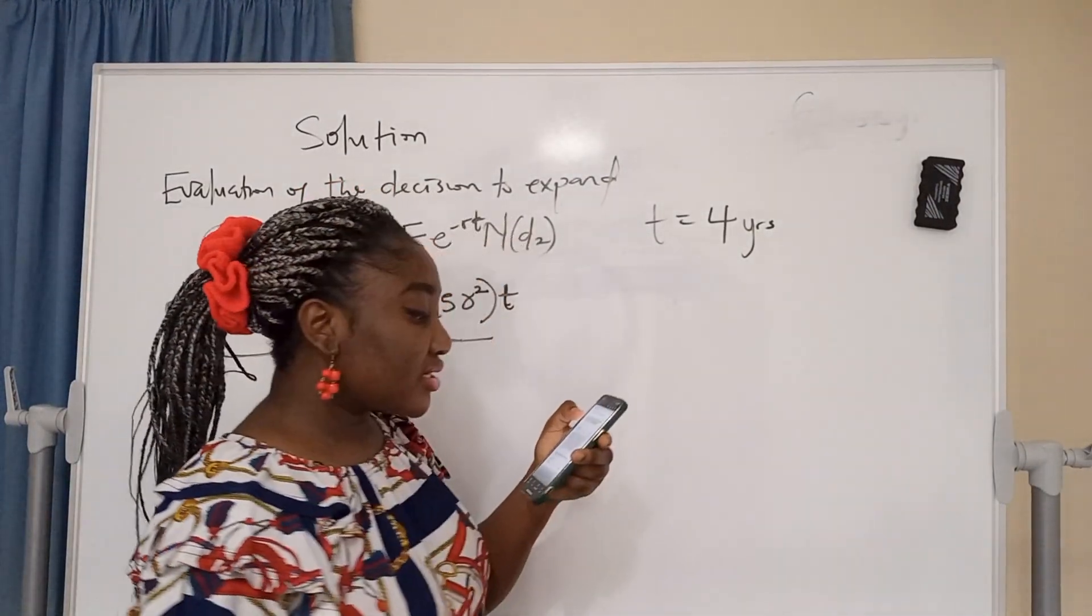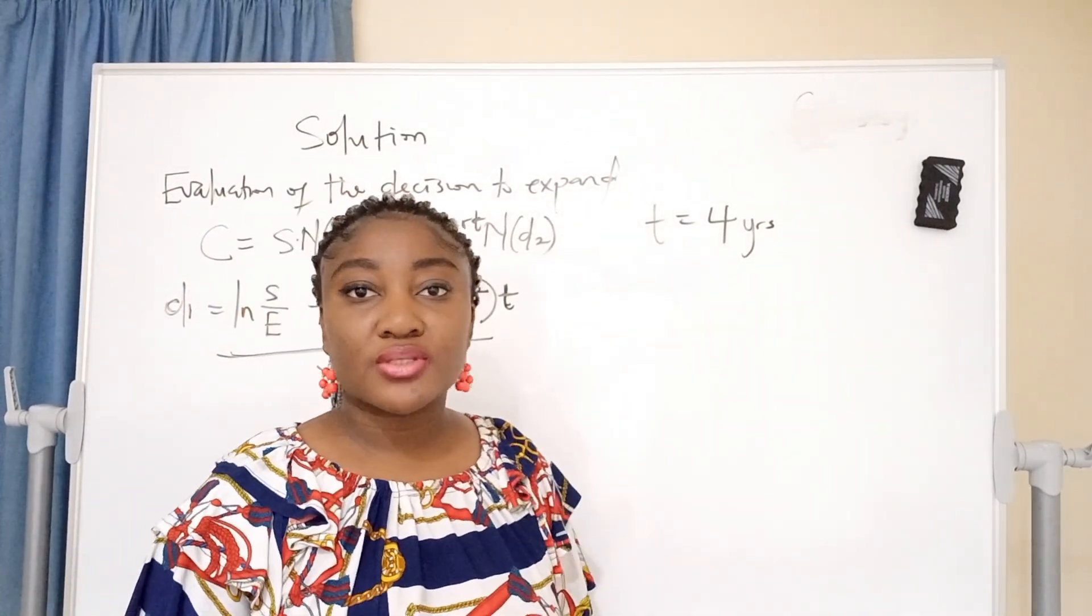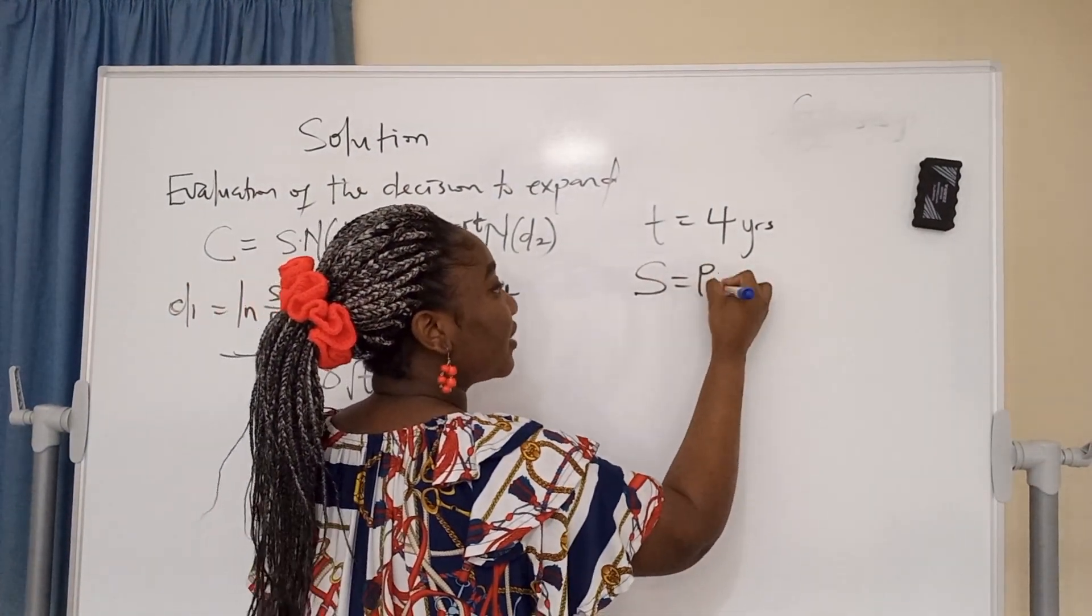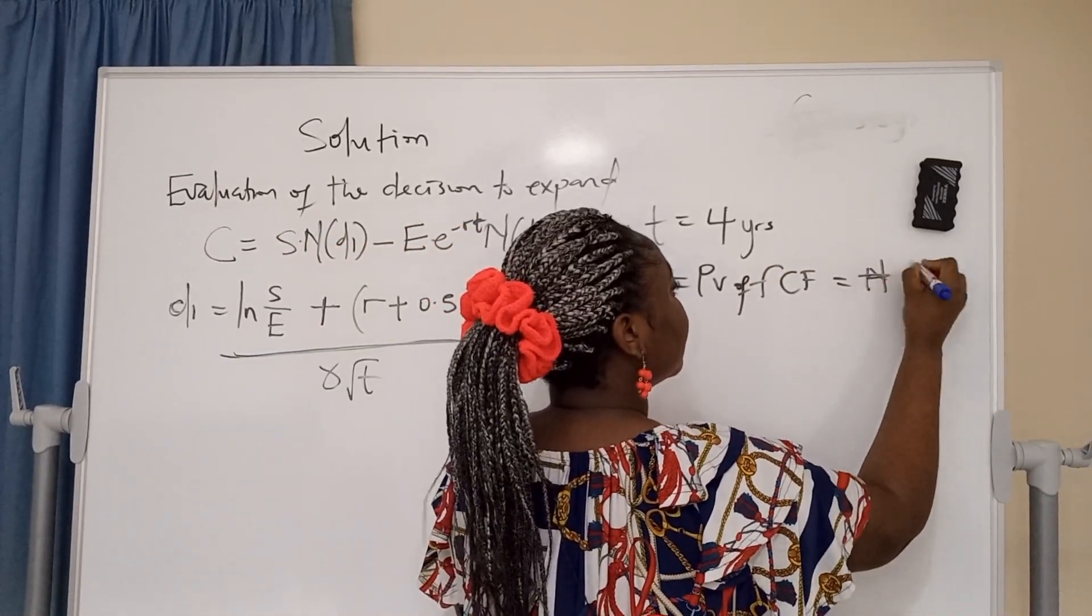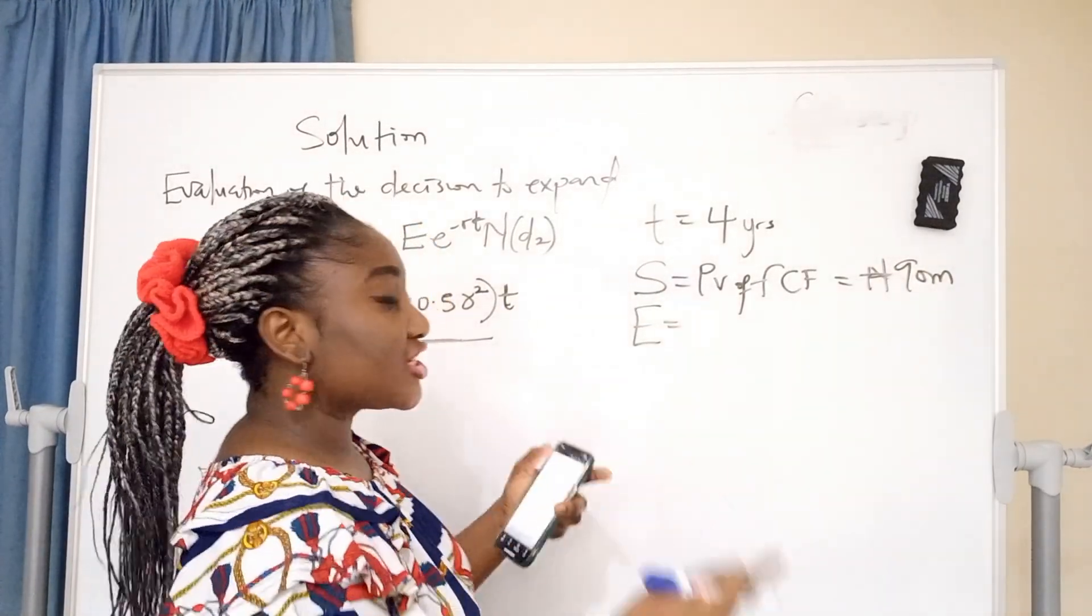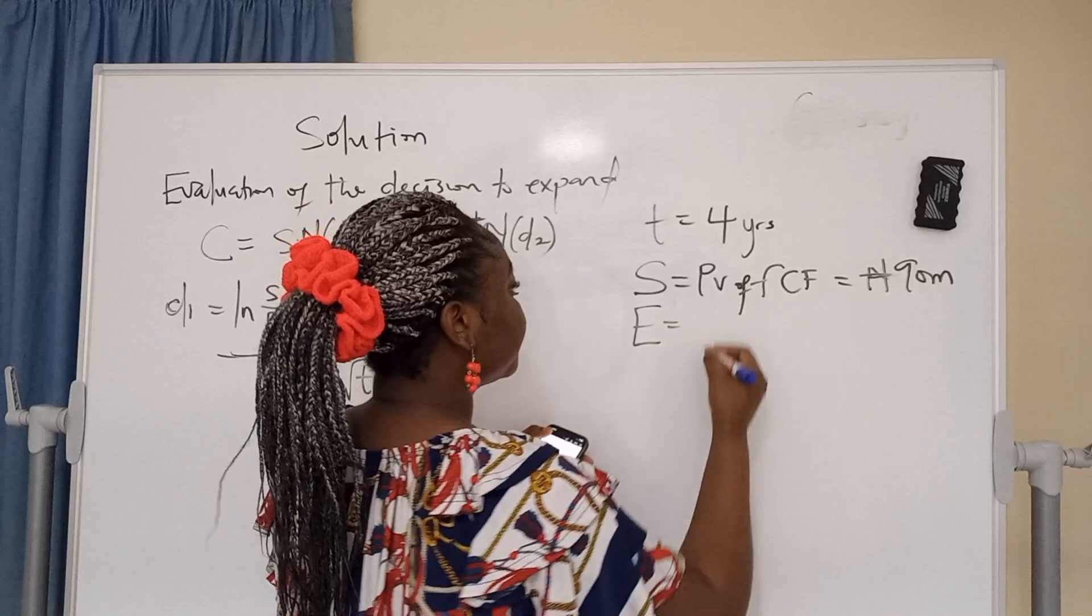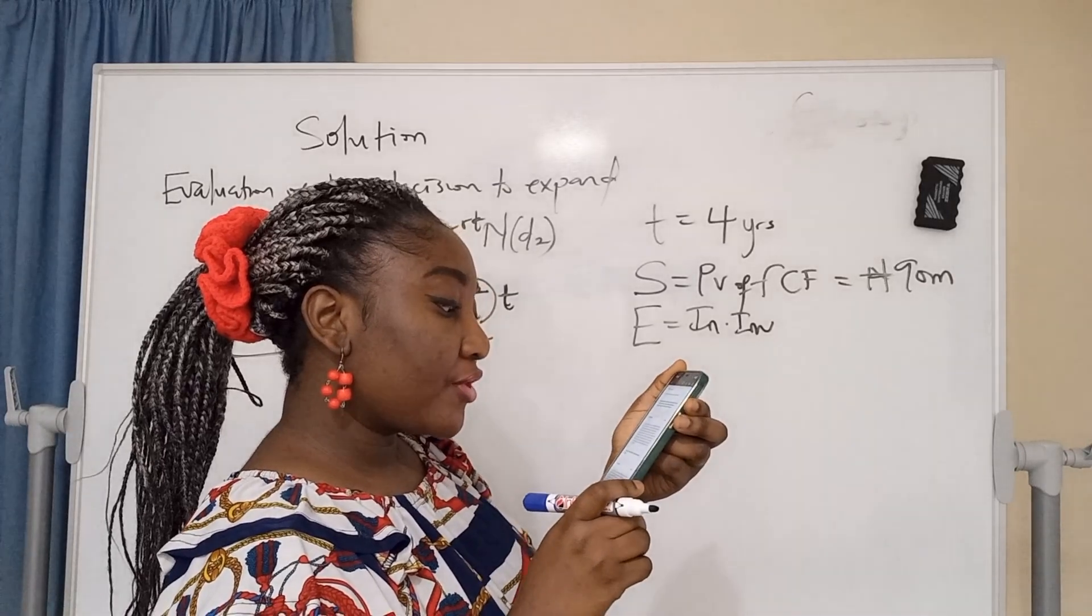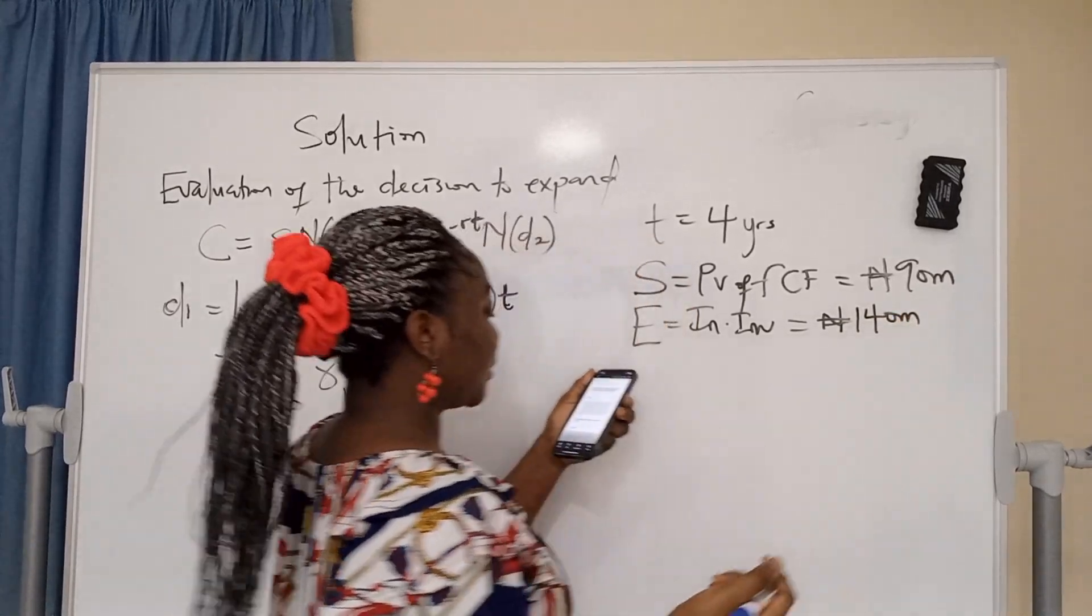They said currently, the present values of the cash flows for the second project. Remember that I said in real options, the 5 key variables are different from the 5 key variables we gave at the beginning. So S is your present value of future cash flows, which they gave you to be 90 million. E is initial investment. If it is a put option, your E will be the disposal value. I explained that in the previous class. So E here is initial investment, and they said the cost of the 4 years project is expected to be 140 million.